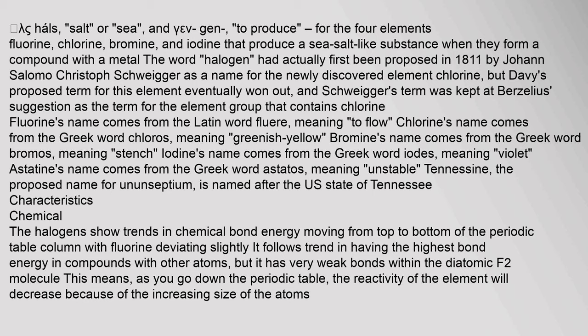Fluorine's name comes from the Latin word fluere, meaning 'to flow.' Chlorine's name comes from the Greek word chloros, meaning 'greenish yellow.' Bromine's name comes from the Greek word bromos, meaning 'stench.' Iodine's name comes from the Greek word iodes, meaning 'violet.' Astatine's name comes from the Greek word astatos, meaning 'unstable.' Tennessine, the proposed name for ununseptium, is named after the U.S. state of Tennessee.